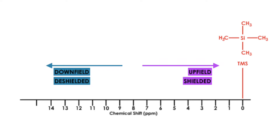Notice all the way to the right at 0 ppm is the TMS peak. This is tetramethylsilane, which is a pretty inert molecule, therefore used as a preferred solvent when performing HNMR because it will not interact with any compounds or molecules you are observing. 0 ppm is also referred to as the reference region or the signal region to indicate that the solution has been received.